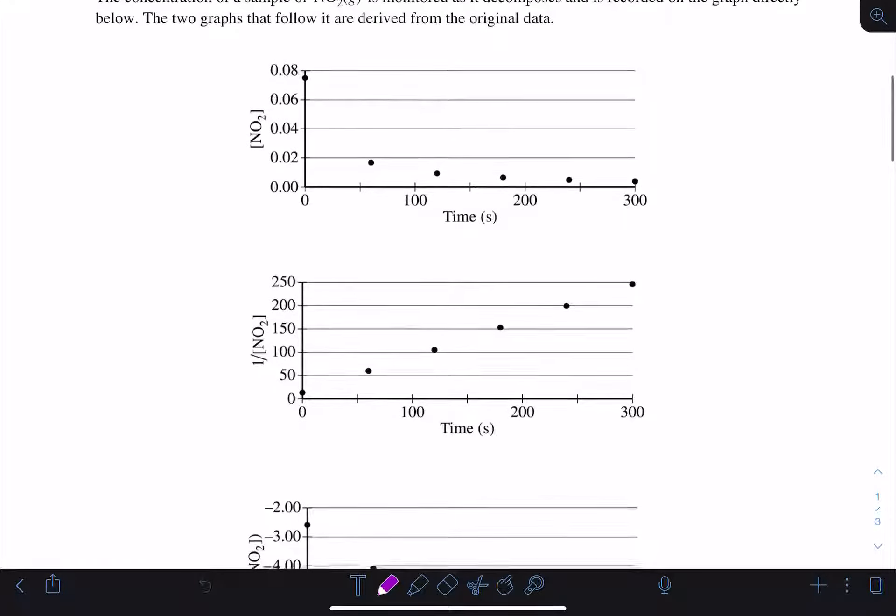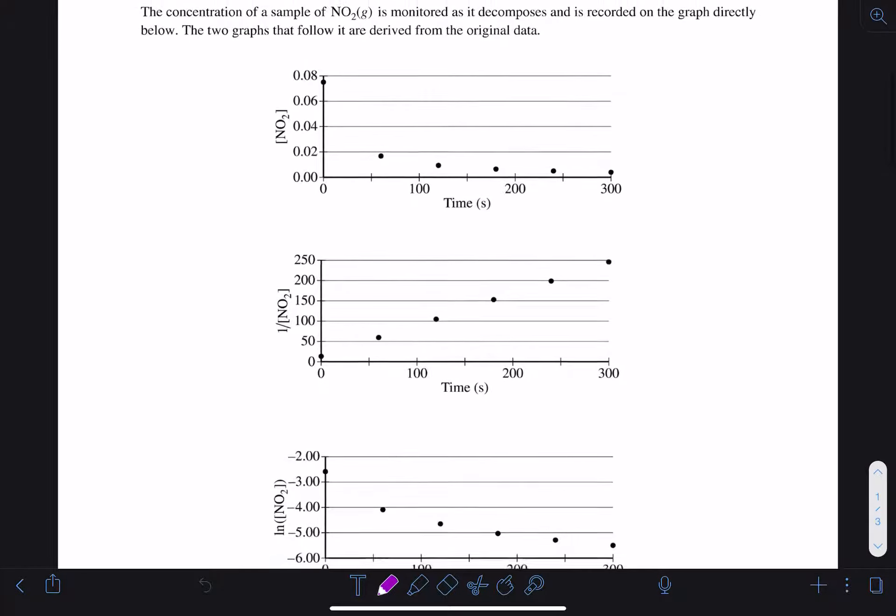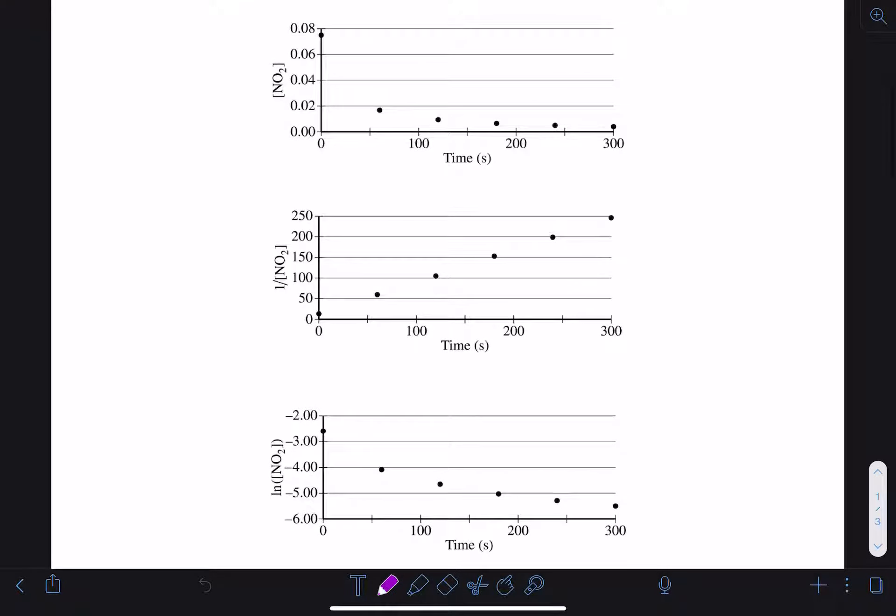If we look at the three graphs provided, we see that we have concentration versus time, inverse of concentration versus time, and natural log of concentration versus time—our typical three kinetics graphs here. Looking at these we see this one is pretty curved, this one looks pretty linear, and this one is pretty curved.